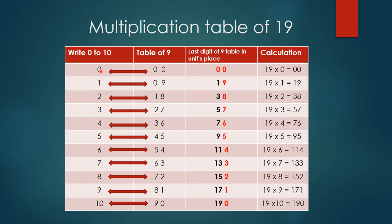This 0 will be added to the number in the tens place of the 9 table. 0+0=0, 0+1=1, 2+1=3, 3+2=5. Watch the arrows: 4+3=7, 4+5=9, 5+6=11, 6+7=13, 7+8=15, 8+9=17, and 9+10=19.